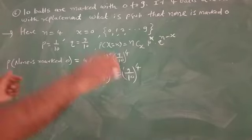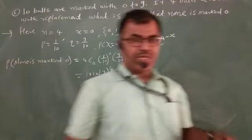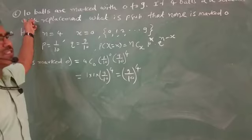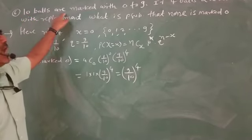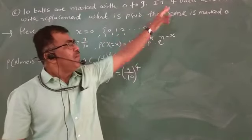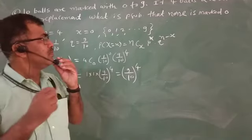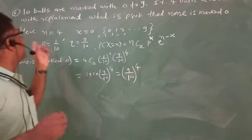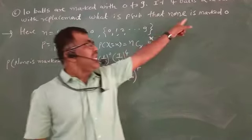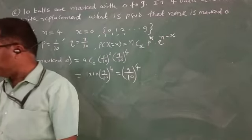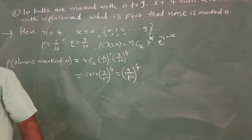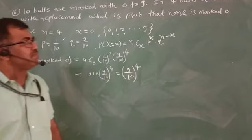Good evening. Today we see Example number six. Ten balls are marked with zero to nine. If four balls are selected with replacement, what is the probability that none is marked with zero?